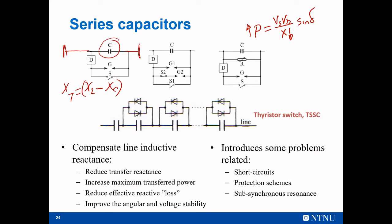And how is the loss reduced? We see that it also reduces the current magnitude, as we saw in the previous slide - this means it's also reducing the losses across the transmission line. Current reduced means reducing the losses. It also increases the reactive power production since we are adding a capacitor, and when current flows through the capacitor, it is producing reactive power. So that is another advantage.